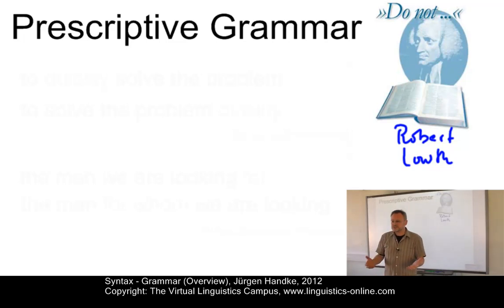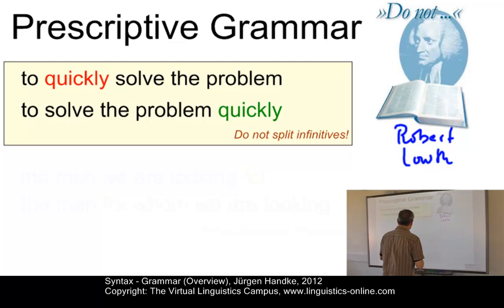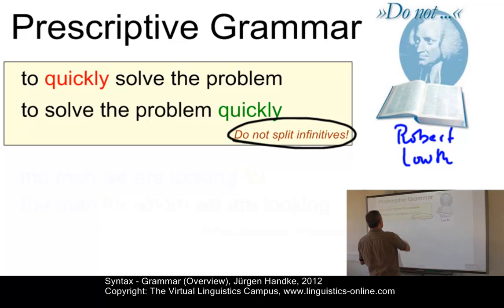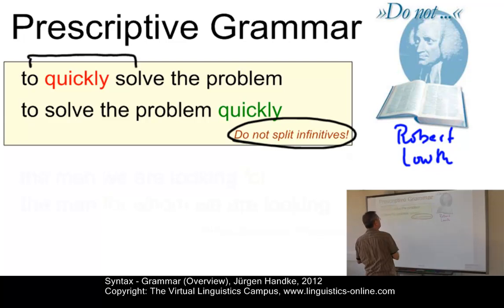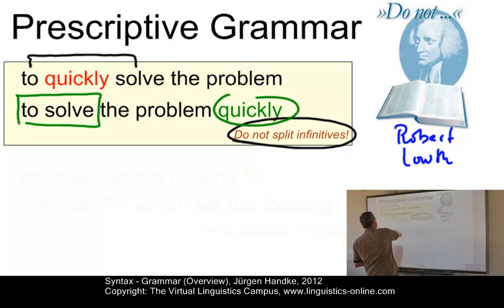In some respect, prescriptive grammars are similar to books on etiquette, which recommend certain types of conduct. Examples of prescriptive rules in English that still exist include the following. One very popular rule simply says: do not split infinitives. Instead of having the adverb 'quickly' between the two elements of an infinitive, the rule says you should put it towards the end and leave the infinitive intact.